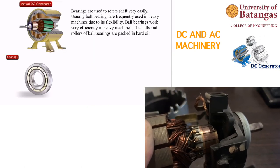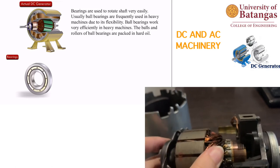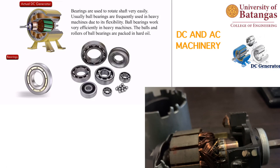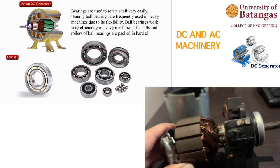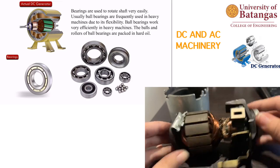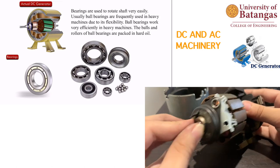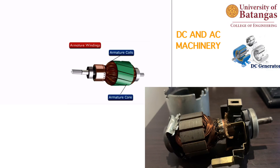Bearings are used to allow the shaft to rotate easily. Ball bearings are frequently used in heavy machines due to their flexibility, and their balls and rollers are packed in hard oil to ensure smooth rotation of the armature.